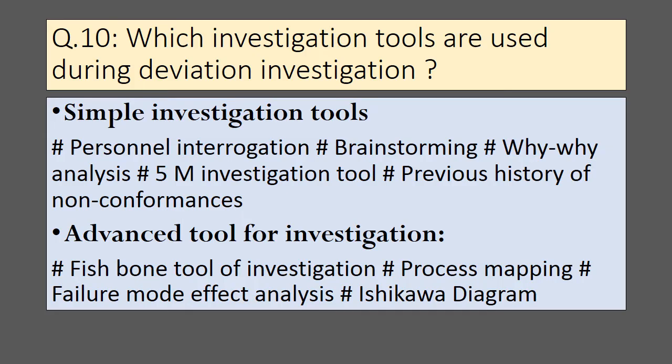Which investigation tools are used for deviation investigation? There are two types: simple investigation tools and advanced tools. Simple tools include personal interrogation, brainstorming, 5-Why analysis, 5M investigation tool, and review of previous history of non-conformances. Advanced tools include the fishbone tool of investigation, process mapping tool, failure mode effect analysis (FMEA) tool, and Ishikawa diagram.